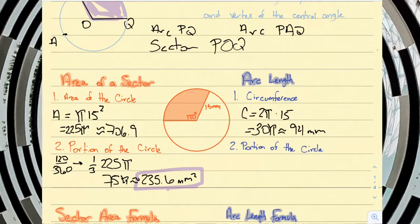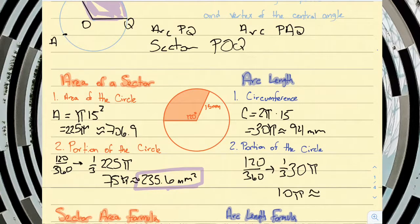But again, we need to pay attention to what portion of the circle we have. We have 120 out of 360, which is, again, a third. And so we're going to go a third of our 30π, which luckily for us does reduce. It's 10π. A third of 30 is 10. And so checking with our calculator, 10π is about 31.4 millimeters.